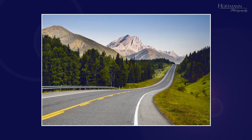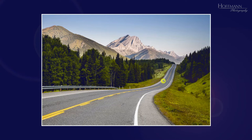Lines don't have to be straight. This road forms an S shape that leads into the distance. Again, the line is a dominant feature of this image. The mountains and trees along the road just complement the line that leads into the background. The mountains and the trees, however, add some texture to the image.